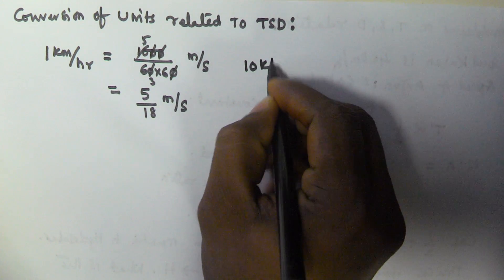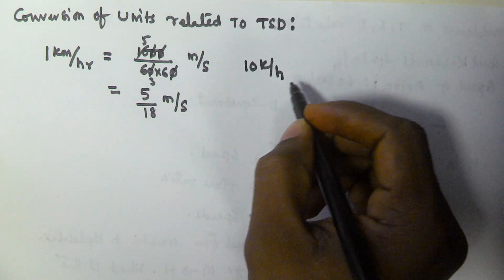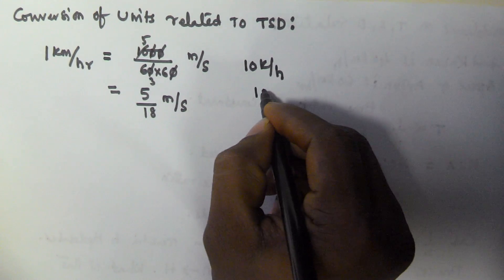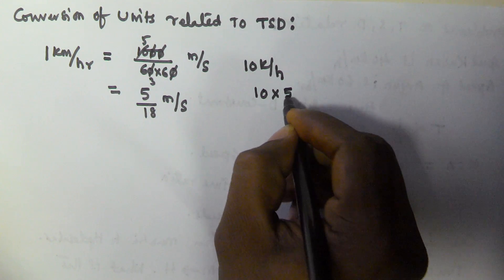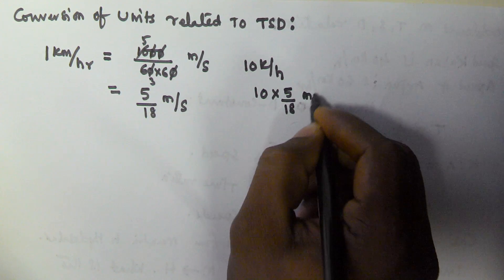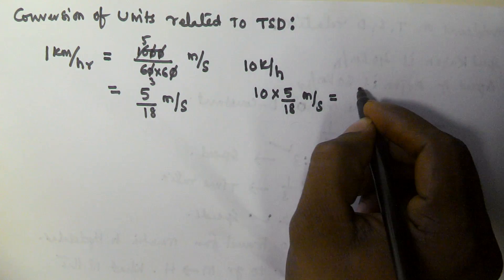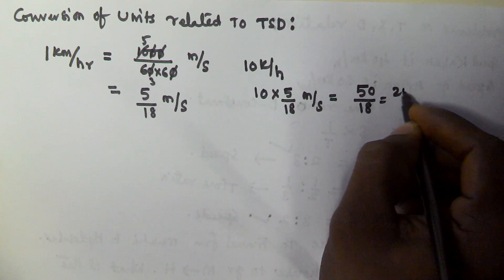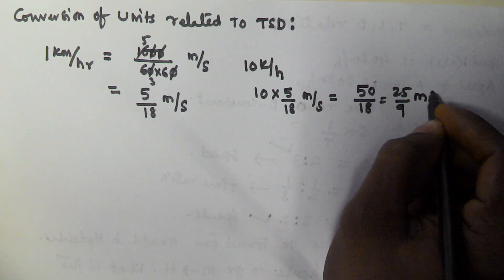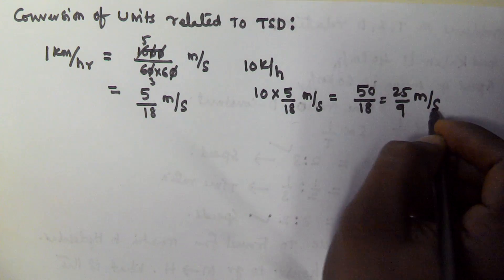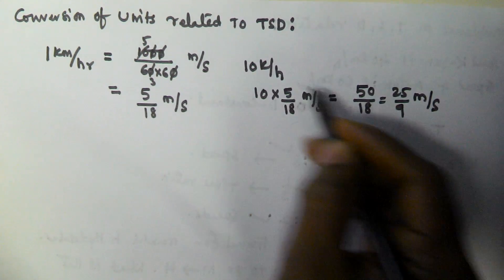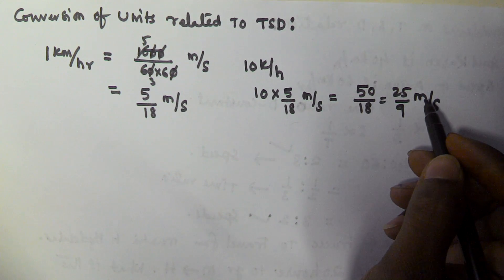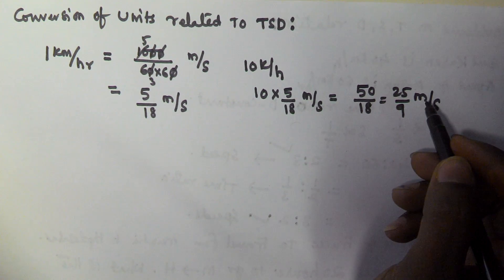For example, we have 10 kilometers per hour — express the speed in meters per second. What we will do is simply multiply by 5 by 18, which gives 50 by 18, that is 25 by 9 meters per second. So 10 kilometers per hour is equivalent to 25 by 9 meters per second.